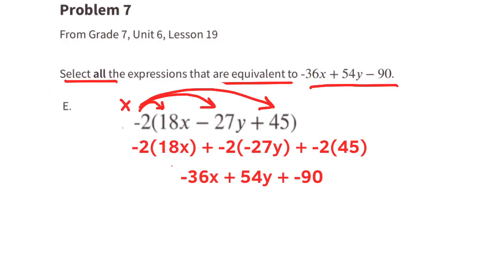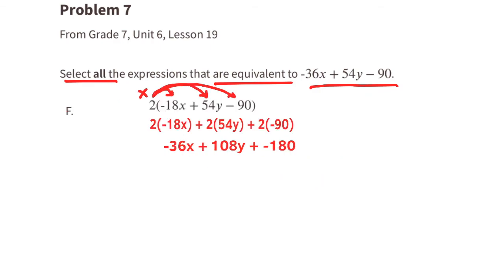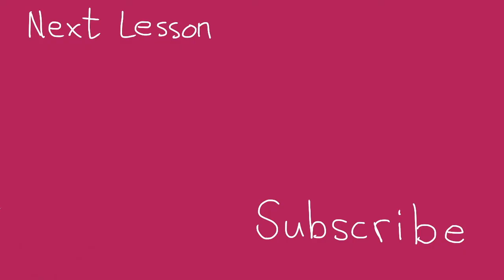Expression e, after multiplying 2 times all three terms inside the parentheses, has a value of negative 36x plus 54y minus 90 — select expression e. Expression f, after multiplying by 2, gives negative 36x plus 108y minus 180 — do not select f. Now is a good time to subscribe if you haven't already. You can watch the next lesson. Thanks for watching!